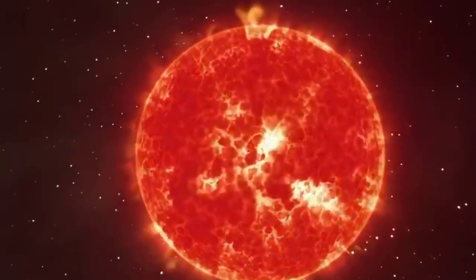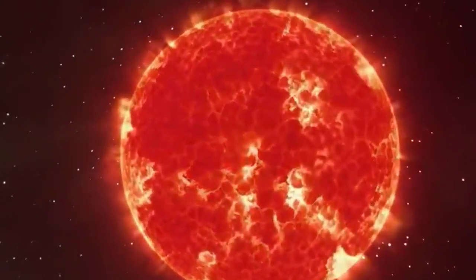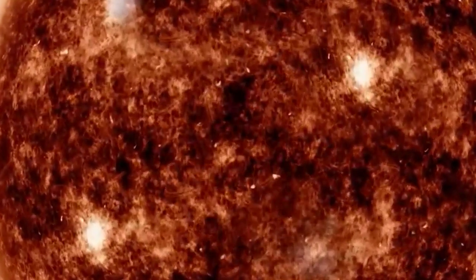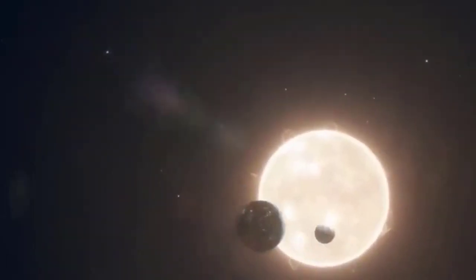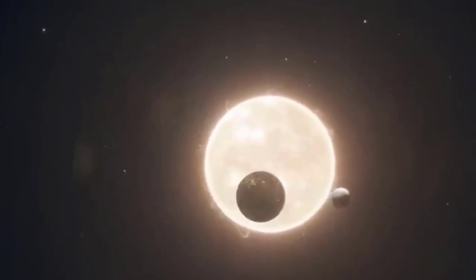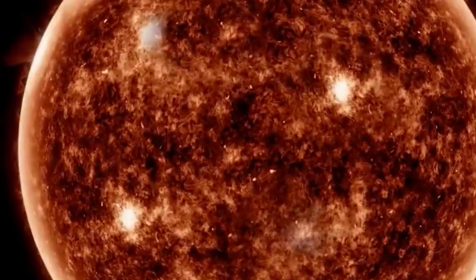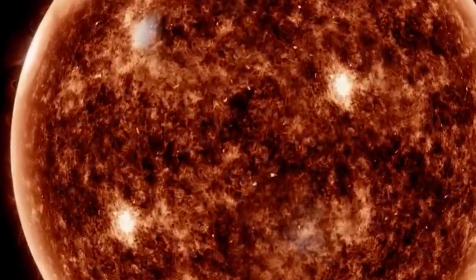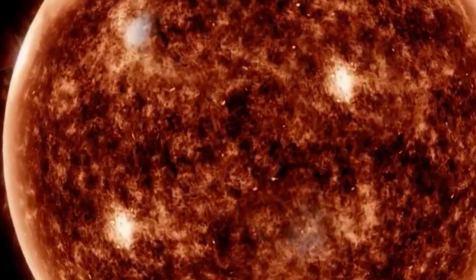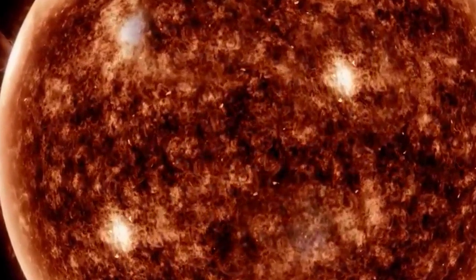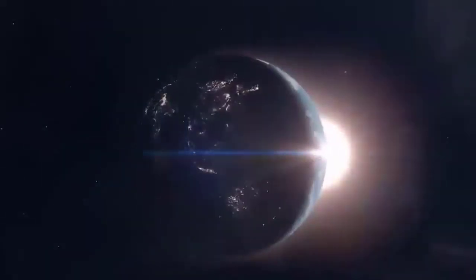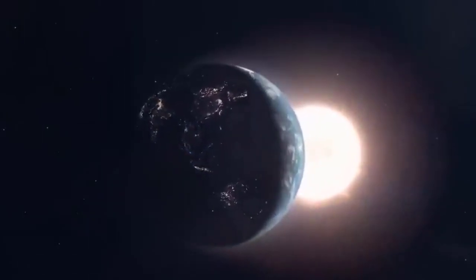While the dust cloud has dispersed and Betelgeuse has returned to its typical brightness, the star hasn't fully reverted to its previous state. Interestingly, its 400-day brightness cycle has now shortened to just 200 days. Betelgeuse's unpredictable behavior sparked discussions about the possibility of an imminent supernova explosion.